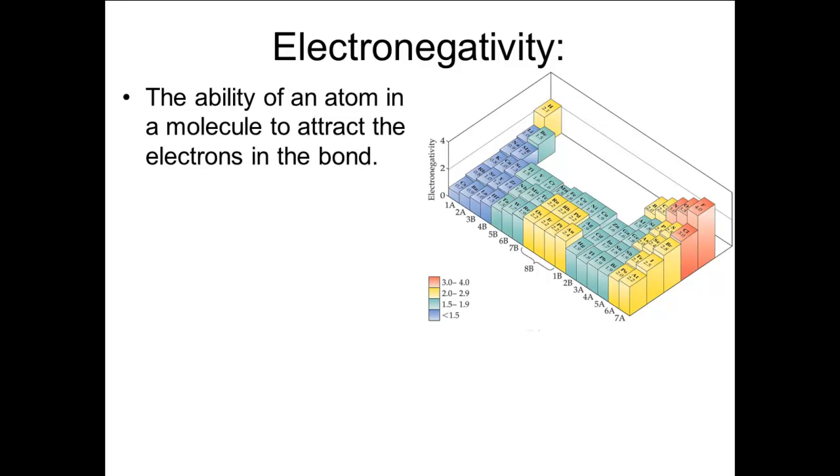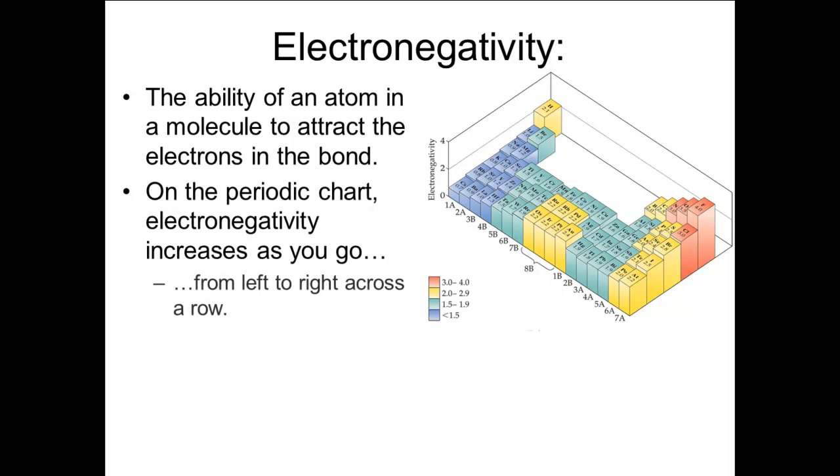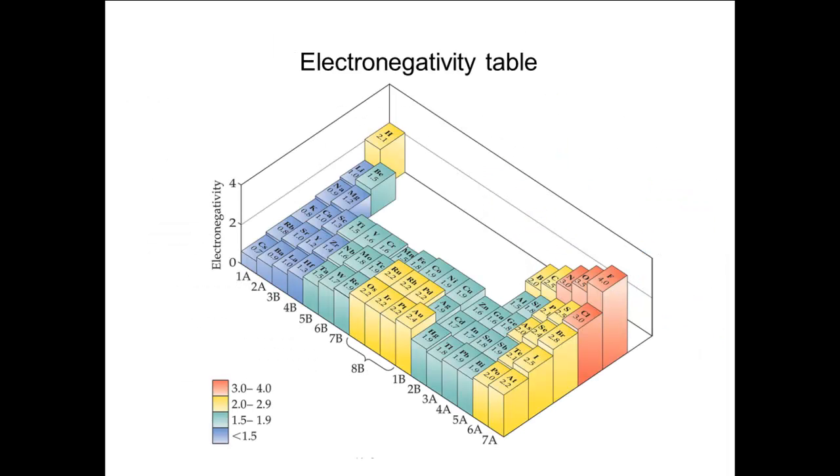Electronegativity is the measure of how strongly an atom pulls on the electrons in a bond. Electronegativity can be thought of as a combination of the ionization energy and the electron affinity, and so changes in the same way that those two quantities change. That is, electronegativity increases as you go from left to right across the table and as you go from the bottom to the top of a column. Because the noble gases do not tend to form compounds, they generally are not given electronegativities. The most electronegative element is fluorine. It's a good idea to memorize that. Next comes oxygen, and then nitrogen and chlorine.